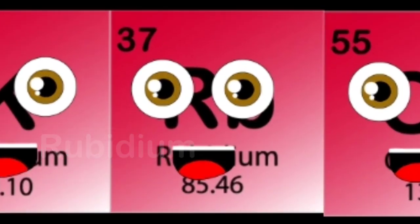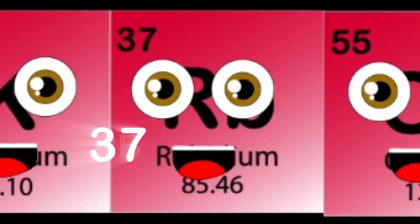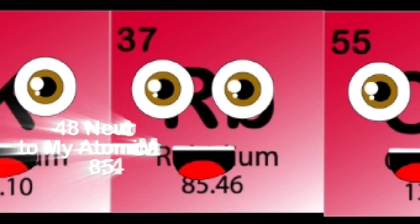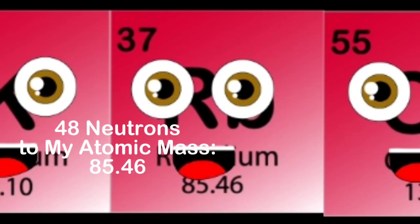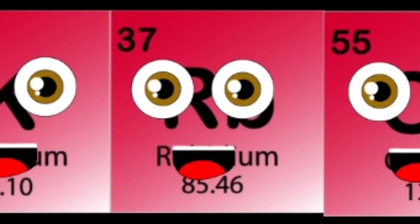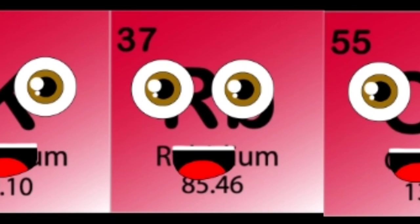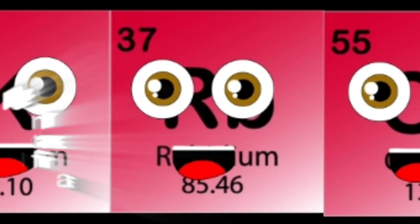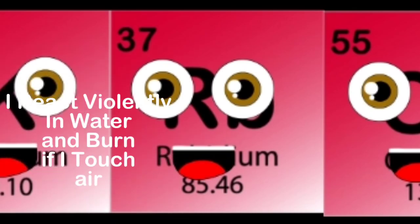I'm a rubidium atom, my symbol is Rb. My atomic number is 37, that's the proton count in me. Add that to my 48 neutrons to get my atomic mass. I have 37 electrons that orbit me real fast.